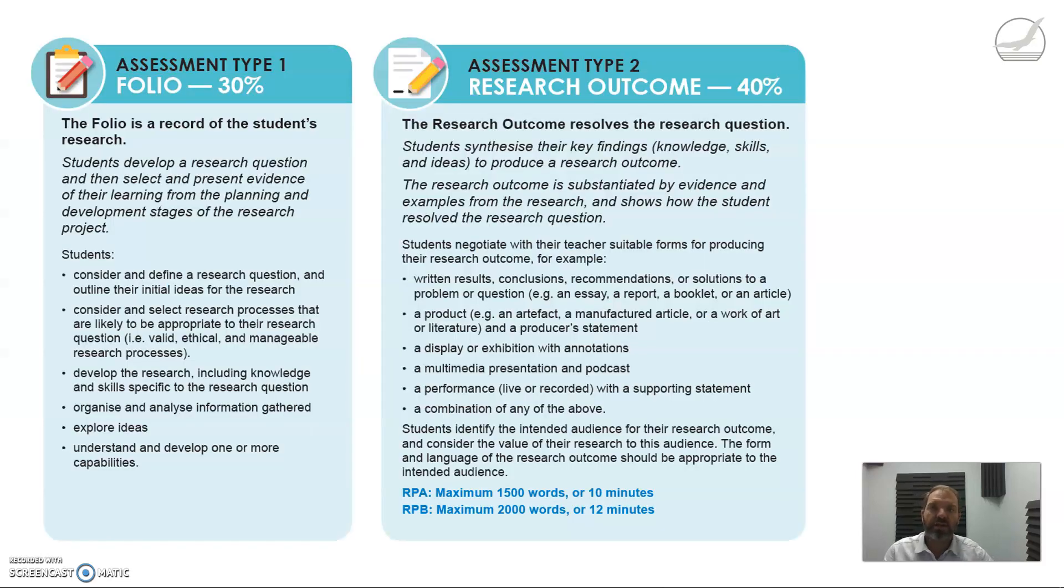Just a reminder that Assessment Type 1, the Folio, worth 30%, is for you to develop a research question and do research into that, finding information about your particular topic and research question from primary and secondary sources.